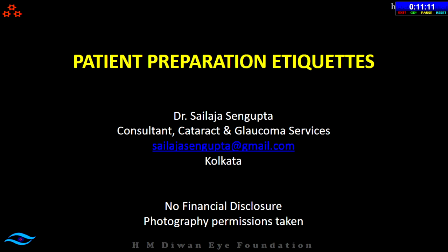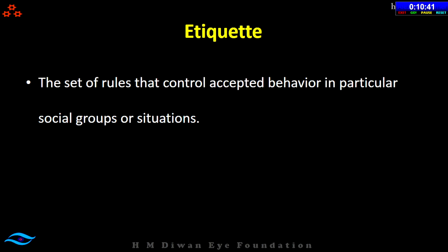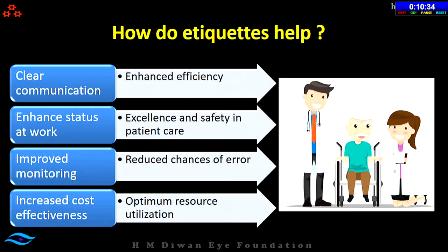Etiquettes are set of rules that control accepted behavior in a particular social group or situation. They help in clear communication which enhances efficiency, thereby achieving excellence and safety in patient care, reducing chances of error, and enabling optimum resource utilization. The important steps in patient preparation are: identification of the patient, documenting findings, preparing the patient, transferring into the OR, transferring out, and incident reporting.